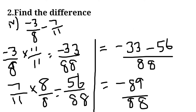Fourth sum: minus 3 by 8 minus 7 by 11. Here LCM is 88 and we get minus 33 minus 56 by 88, equal to minus 89 by 88.